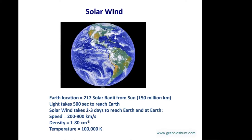Earth is located 150 million kilometers from the sun. Light takes about 500 seconds to reach Earth. The solar wind takes 2 to 3 days to reach Earth, with speeds varying from approximately 200 to 900 kilometers per second. The density of the solar wind at Earth varies from approximately 1 to 80 per cubic centimeter, and the temperature is approximately 100,000 Kelvin.